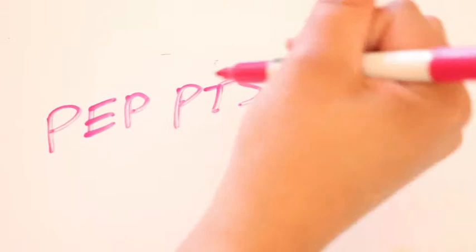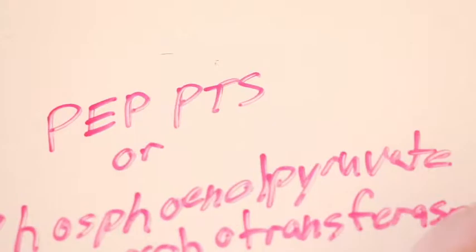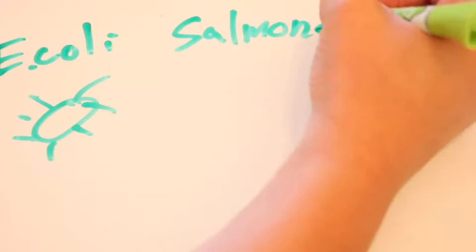Hi everyone, my name is Carla Riley and I'm here just to talk to you guys about PEP-PTS or phosphoenolpyruvate phosphotransferase system. It is most likely found in E. coli, salmonella, or other bacteria cells.